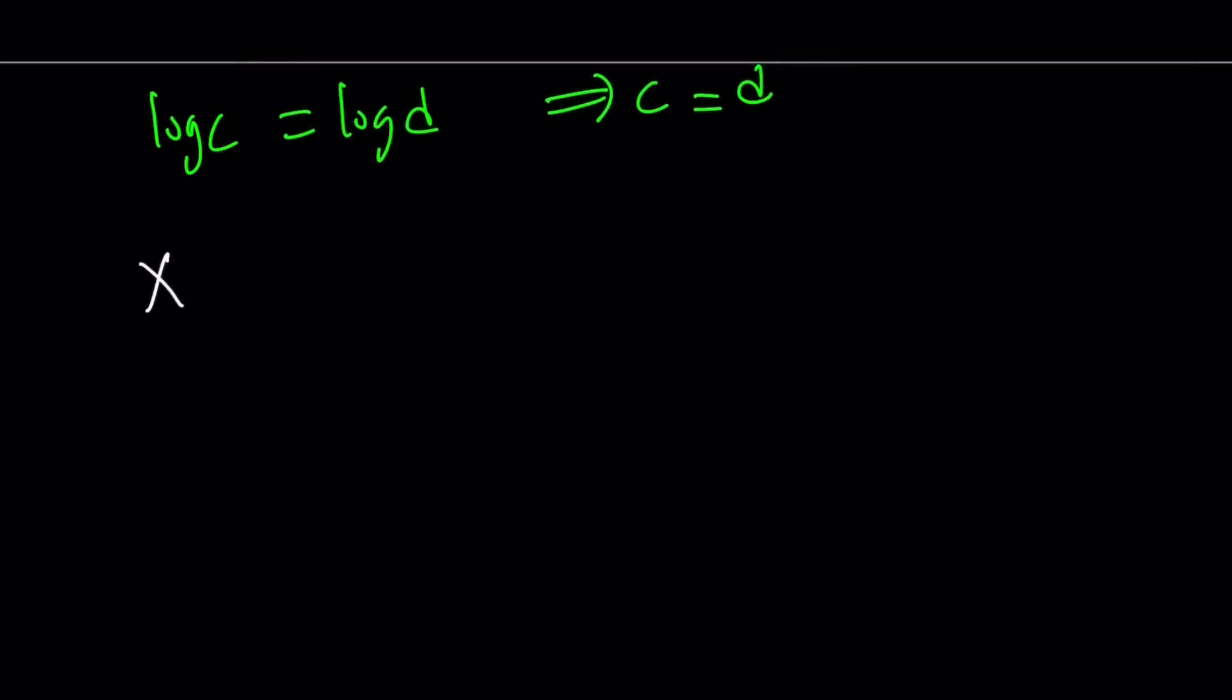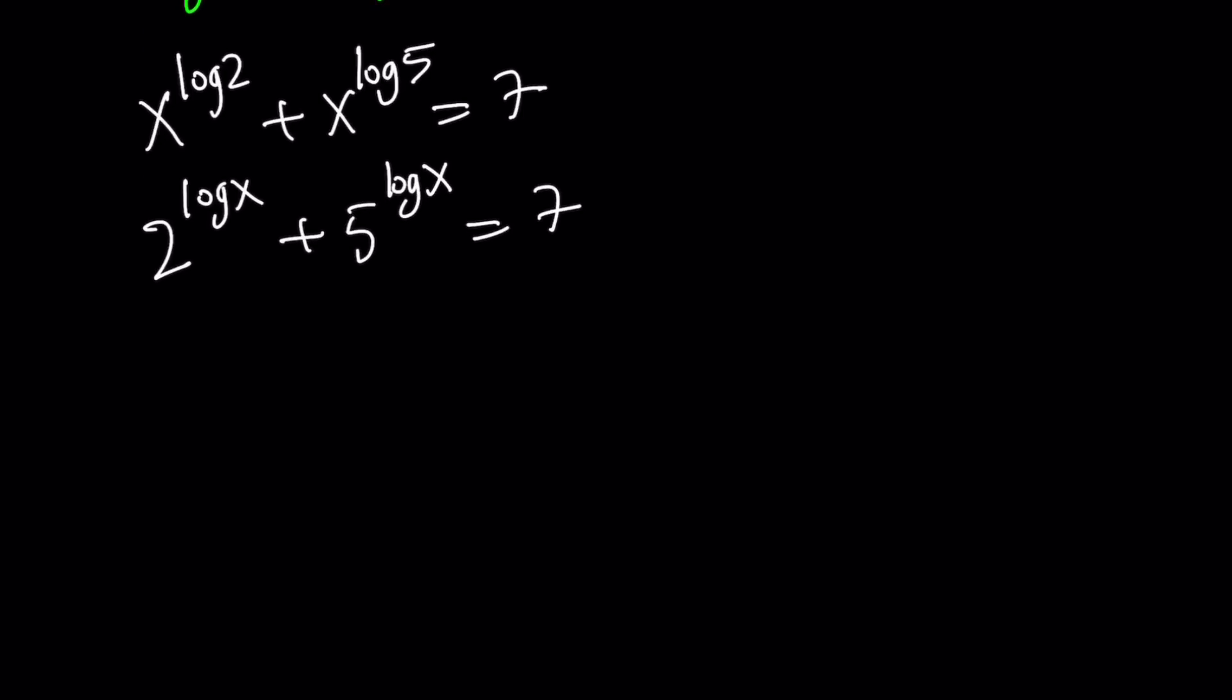Well, we have x to the power log 2 plus x to the power log 5 equals 7. So now x to the power log 2 can be written as 2 to the power log x, and the second one can be written as 5 to the power log x. This is nice because now we have the same exponent. That doesn't mean we can combine them or add them or multiply them, but it just makes it a little easier. So let's go ahead and replace log x with something.